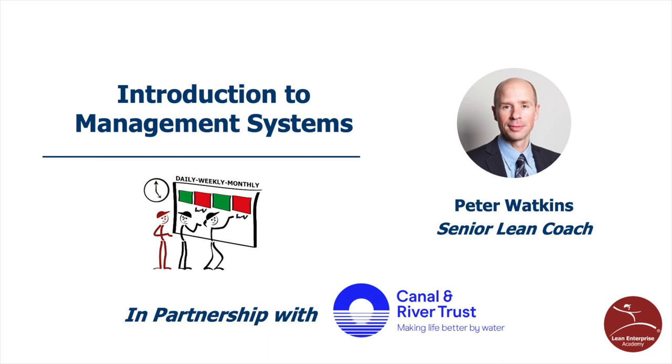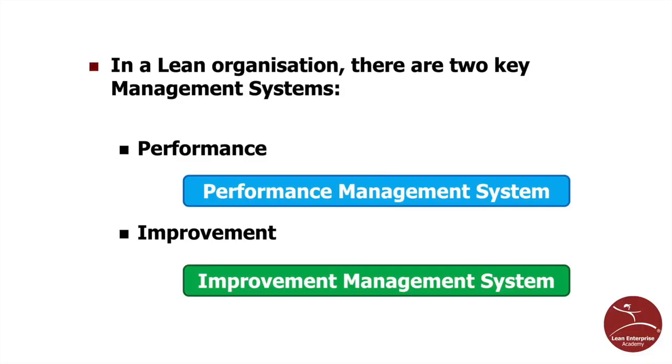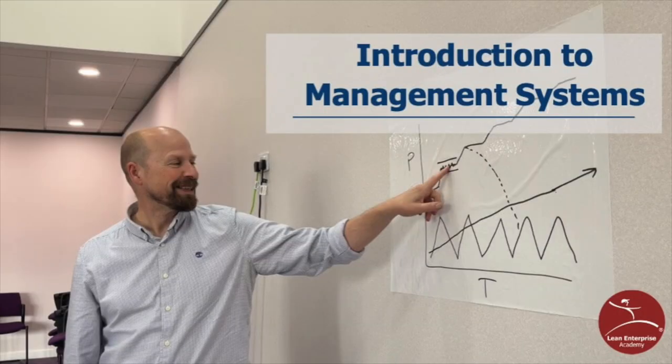In this video, senior lean coach Peter Watkins introduces what the different lean management systems are and why you need to have a combined approach. There are two key management systems in a lean organization: one for performance and one for improvement. Peter explains this in further detail.